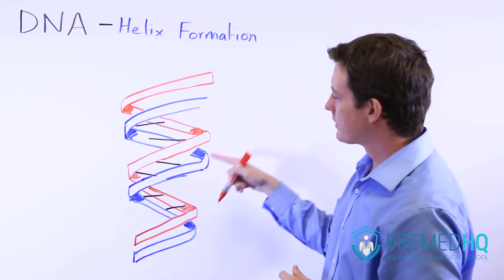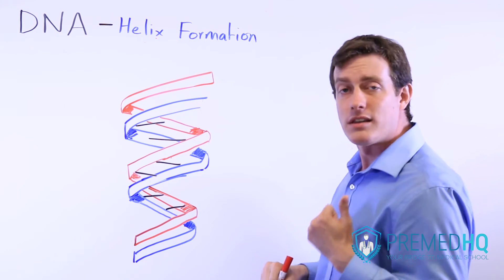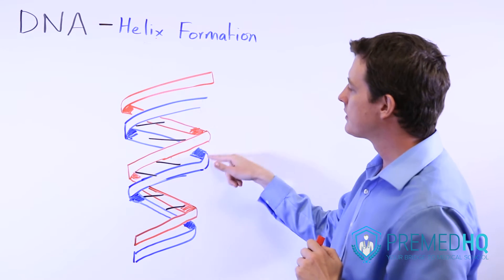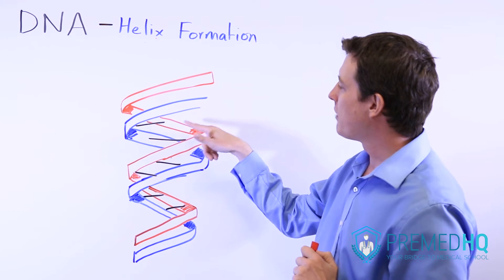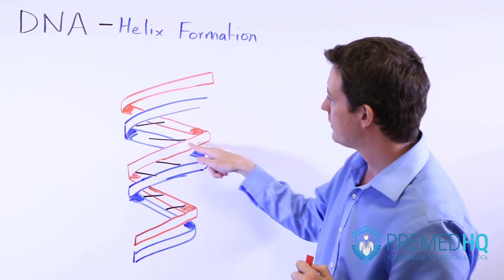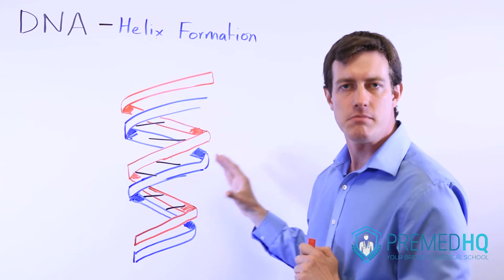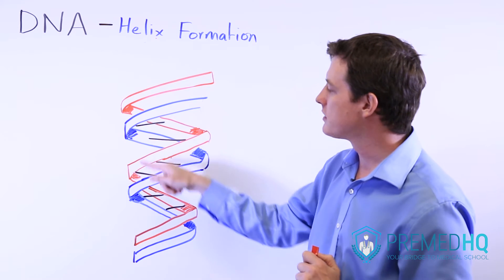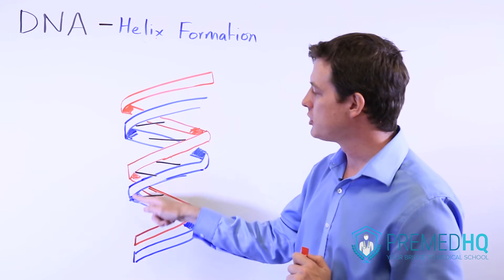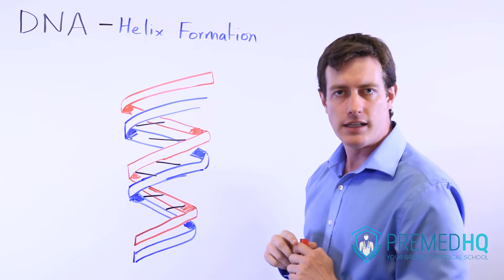When you have a helix that forms like this, one thing to be aware of is that the helix completes a full spiral. So it goes from this point and spirals all the way around to get back here every ten bases. So every ten base pairs you're going to see a return to the original position of that helix.